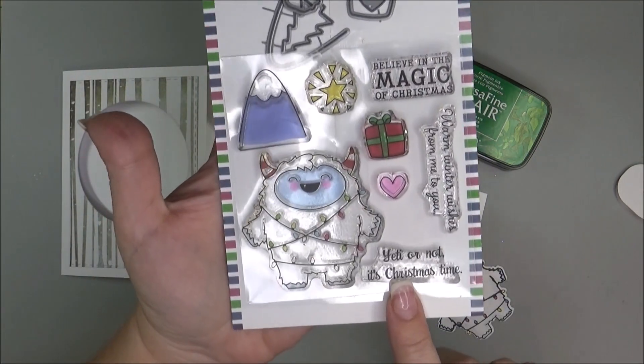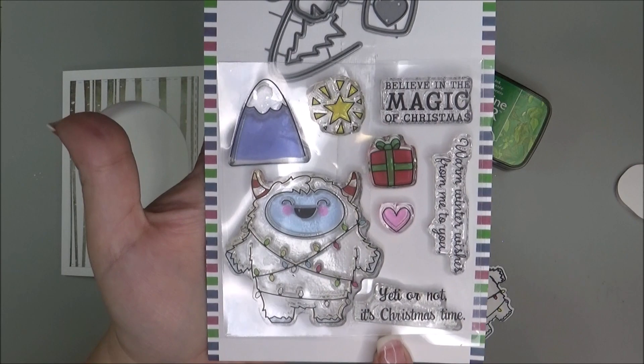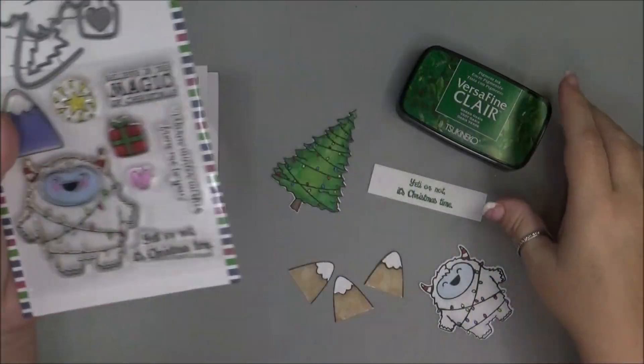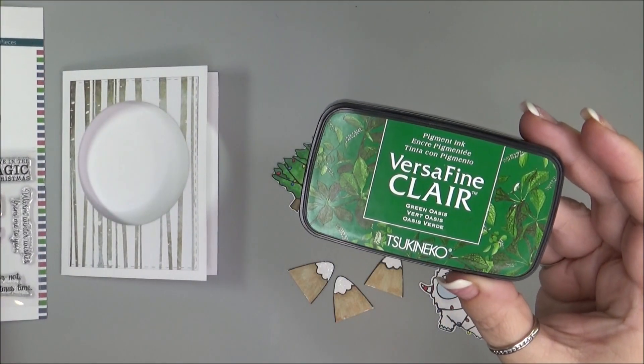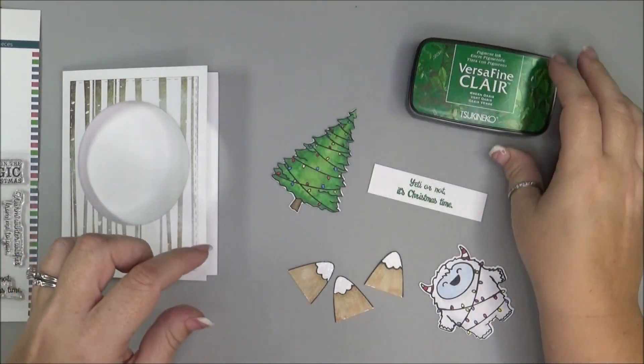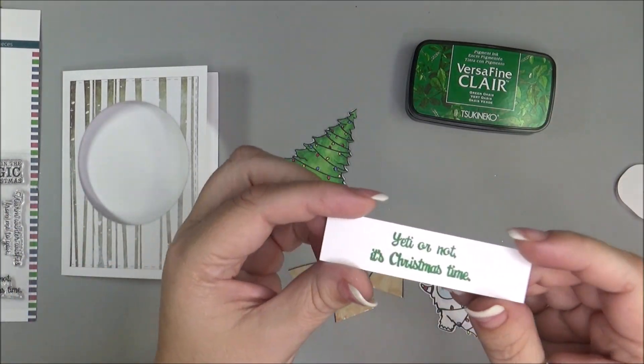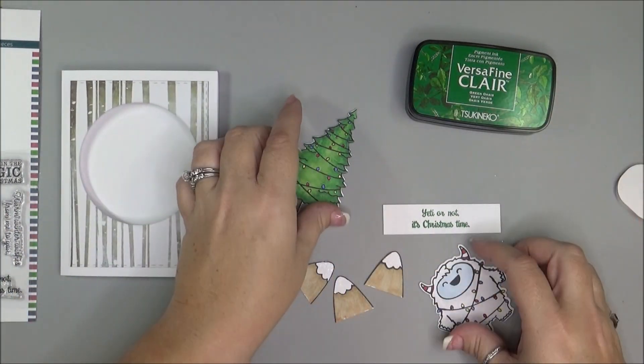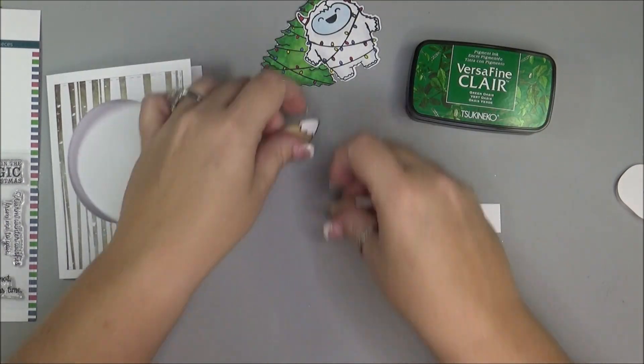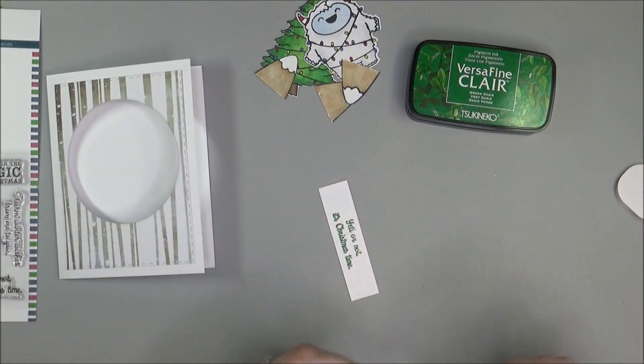And then using the Yeti or not, it's Christmas time stamp. I stamped that with some VersaFine Clair Green Oasis onto a strip of white cardstock. And I'm going to make that into a banner.